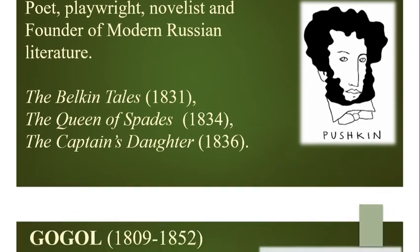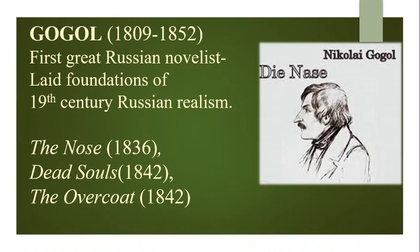The next author is Nikolai Gogol, 1809–1852. Gogol was a Russian dramatist, novelist, and short story writer. He is considered the first great Russian novelist and laid the foundations of Russian literary realism. Some of his popular works are The Nose in 1836, Dead Souls in 1842, and The Overcoat in 1842.